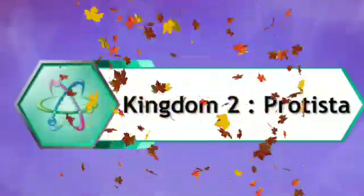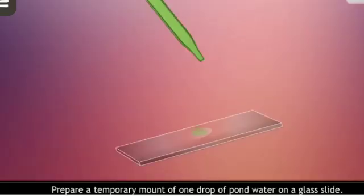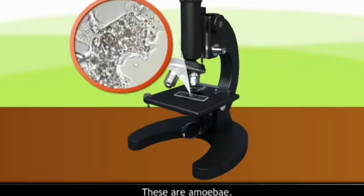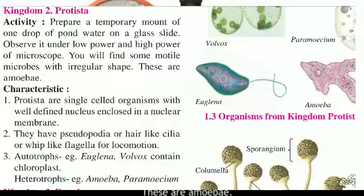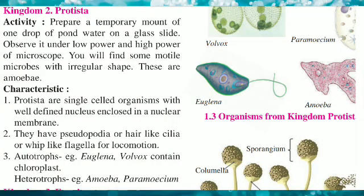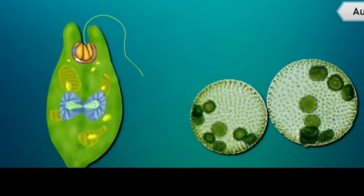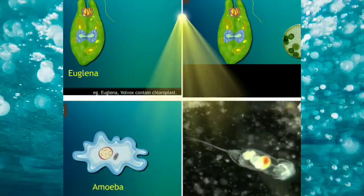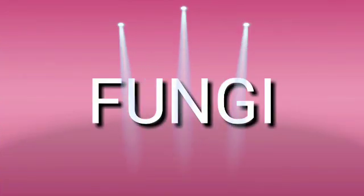Let us move towards the second kingdom, Protista. Activity: Prepare a temporary mount of one drop of pond water on a glass slide and observe it under low power and high power of the microscope. You will find some motile microbes with an irregular shape — these are amoeba. Protista are single-celled organisms with a well-defined nucleus enclosed in a nuclear membrane. They have pseudopodia, hair-like cilia, or whip-like flagella for locomotion. Autotroph examples are Euglena and Volvox, which contain chloroplasts. Heterotroph examples are amoeba and paramecium.